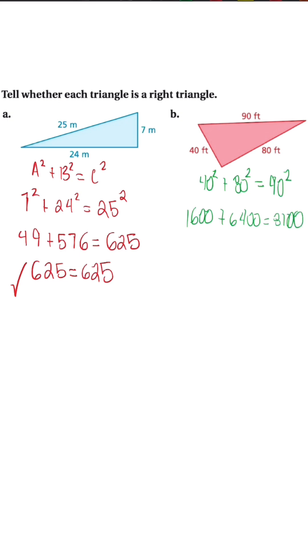Once we simplify, we're going to get 8000 is equal to 8100. Because this is not a true statement, triangle b is not a right triangle.